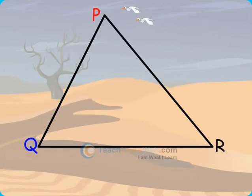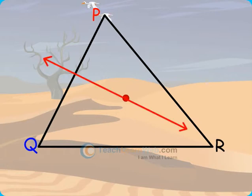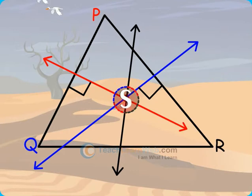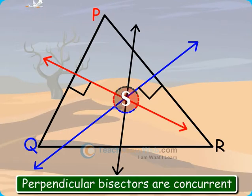Consider a triangle PQR. Draw the perpendicular bisectors of PQ, QR and PR and let these intersect at S. You might have noticed that the perpendicular bisectors are concurrent.